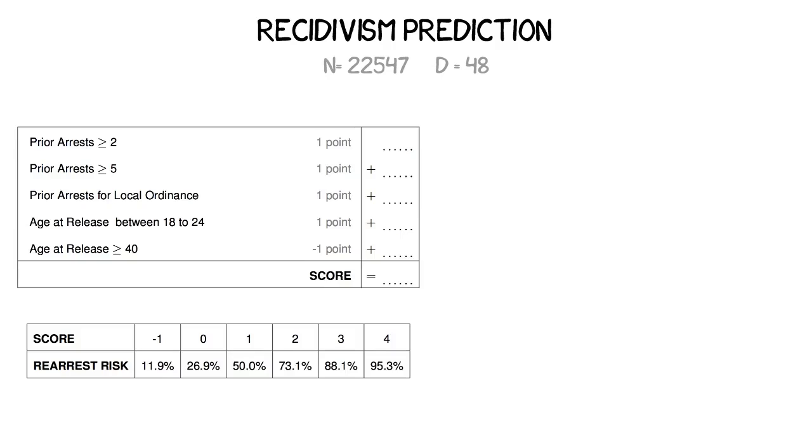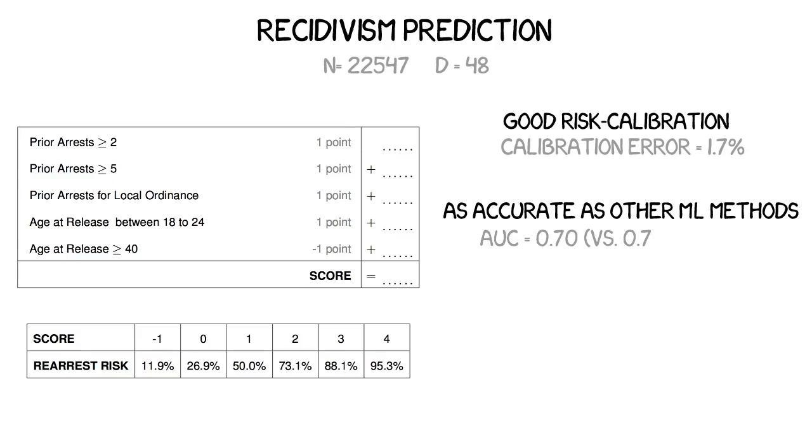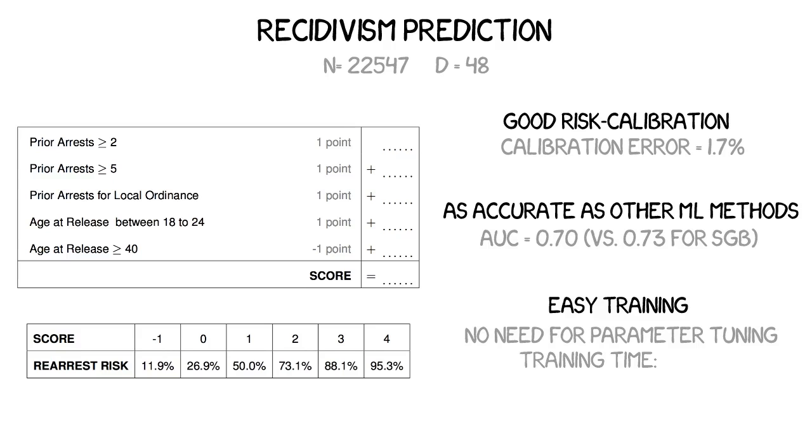With our algorithm, we can fit optimized risk scores, like this one, for recidivism prediction. We show how this approach can avoid the pitfalls of heuristics, address a wide range of real-world constraints, and produce simple models with better performance.